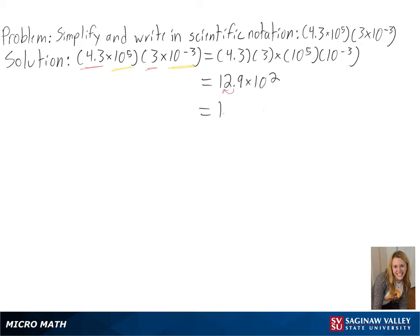Now, we can rewrite the new number in scientific notation. Since we are moving the decimal to the left, we will multiply 1.29 by 10, and then combine the powers of 10 to get 1.29 times 10 to the third power as our final answer.